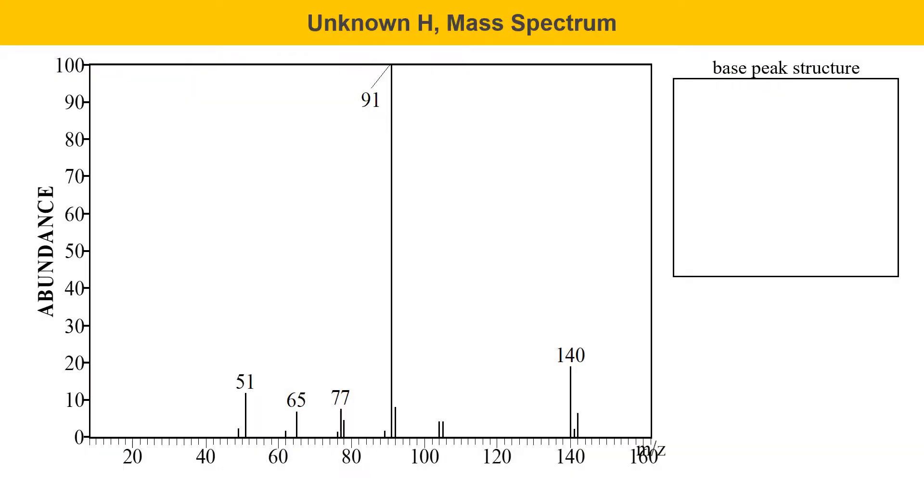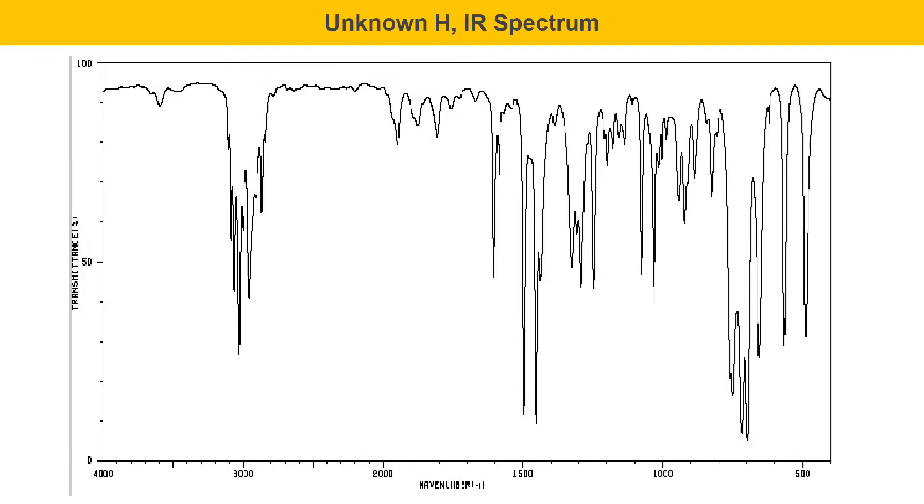Here's the mass spectrum of unknown H. One of the things you should be aware of is that the molecular ion region here has two peaks. One peak at 140 and then a significant M plus 2 peak at 142. You should figure out what that means. Here's the IR spectrum of unknown H.